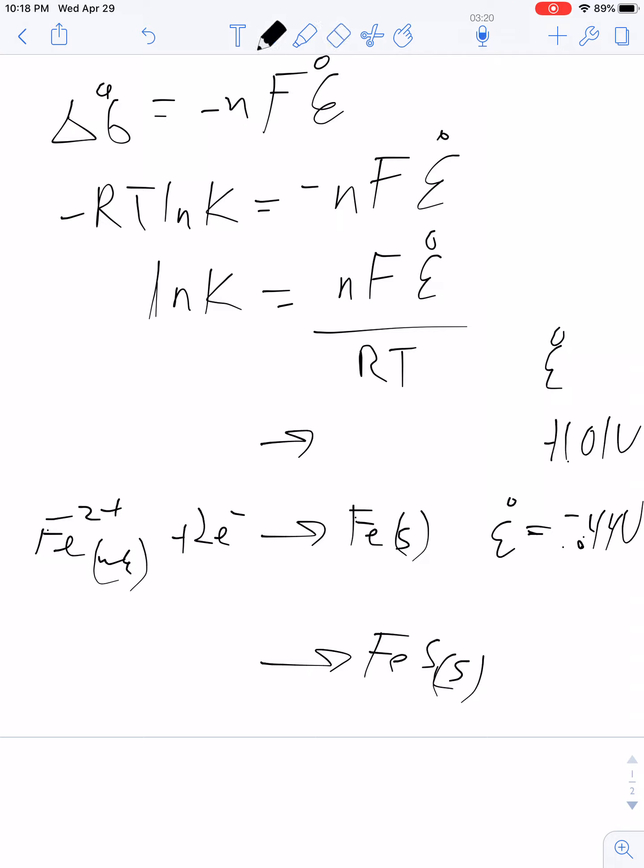We flip it. The sign is going to change. And then we're going to get that iron solid plus that sulfide giving us iron sulfide plus two electrons. Are the electrons balanced? Yes, they are. So they will cancel.